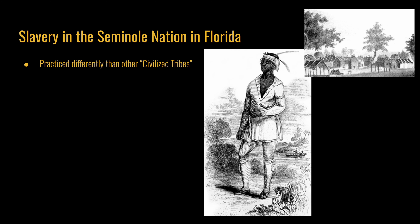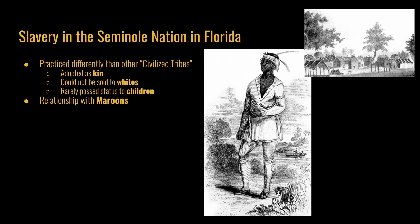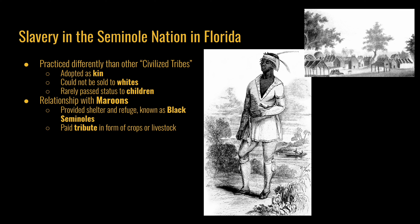Out of the Five Civilized Tribes, the Seminole Nation in Florida practiced slavery in a different way, sometimes described as a looser form of slavery than the rest. They adopted enslaved Africans as kin or family members who could not be sold to whites, and the status of slavery rarely passed down from the mother to the child. Additionally, they had a good relationship with Maroons, or runaway enslaved people coming from South Carolina and Georgia into Florida. They provided shelter and refuge to these Maroons, who were later known as Black Seminoles, and the Black Seminoles paid a tribute to the Seminole Nation in the form of crops or livestock.